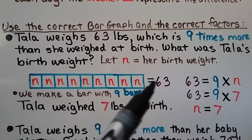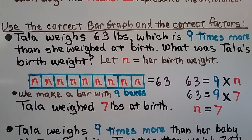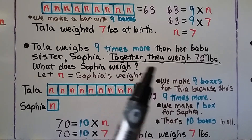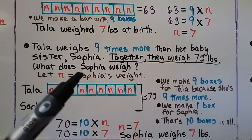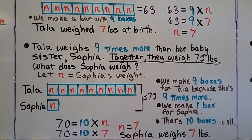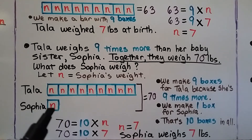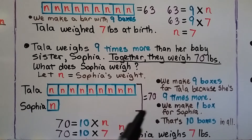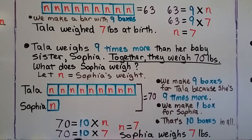We just had one bar split into nine equal parts. But when we change the problem to: 'Tala weighs nine times more than her baby sister Sophia; together they weigh 70 pounds — what does Sophia weigh?' — now we let n be Sophia's weight. We make nine boxes for Tala and one box for Sophia, giving 10 boxes total that equal 70. So 70 equals 10 times n, and since 10 times 7 is 70, n equals 7. Sophia weighs 7 pounds.